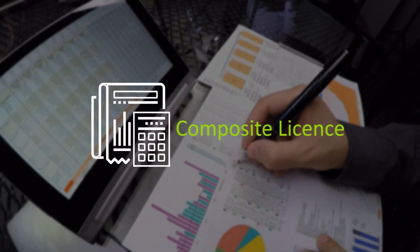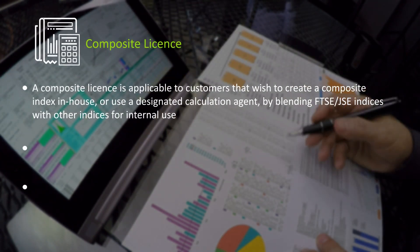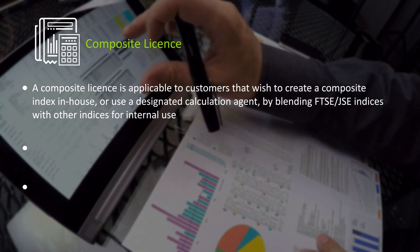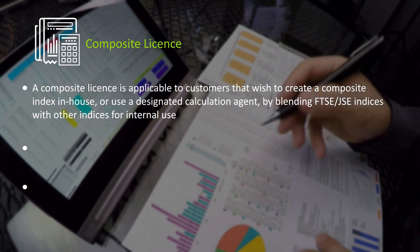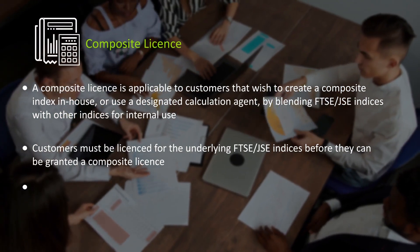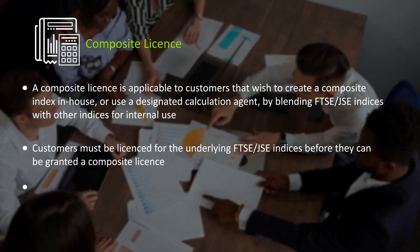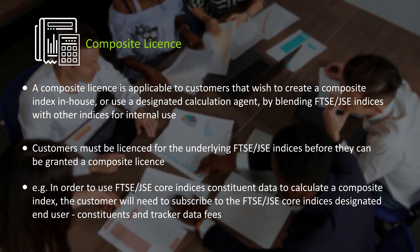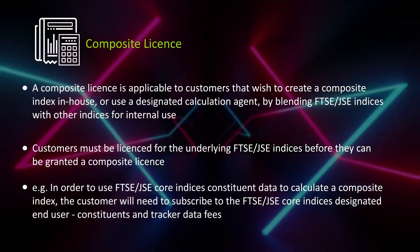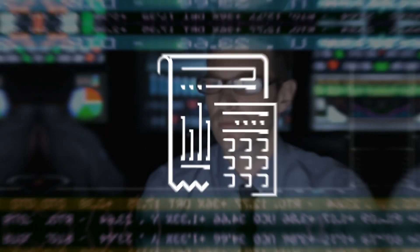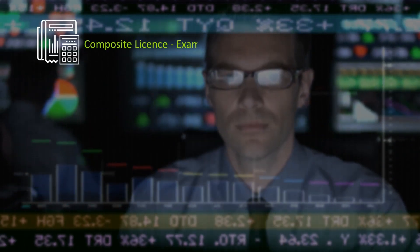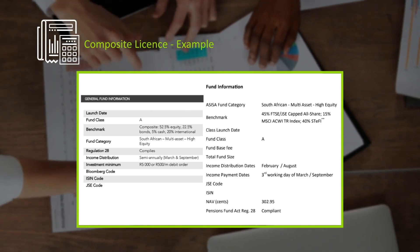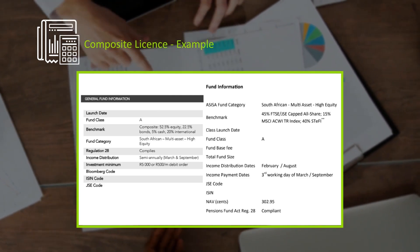Composite License: In order to use FTSE JSE Core Indices Constituents Data to calculate a composite index, the customer will need to subscribe to the FTSE JSE Core Indices Designated End User, Constituents and Tracker Data Fees. An example of a composite license shows the benchmark as 40% of the FTSE JSE CAPT All Share, 15% of the MSCI All World Countries Total Return Index, and 40% of the Steffi Index to create a composite license.